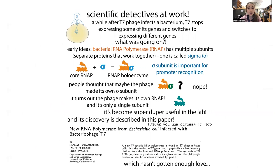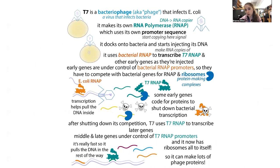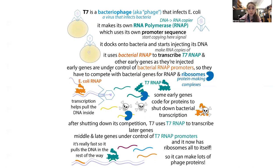T7 is a bacteriophage with a double-stranded DNA genome, meaning it needs the bacteria to make RNA for its proteins. It has early genes under bacterial RNA polymerase promoters and late genes under T7 RNA polymerase promoters. The early genes include things like T7 RNA polymerase itself, so the phage can later make late gene mRNAs. There are also early proteins that shut down bacterial transcription, such as the gene 0.7 kinase that phosphorylates and cripples the bacterial RNA polymerase.